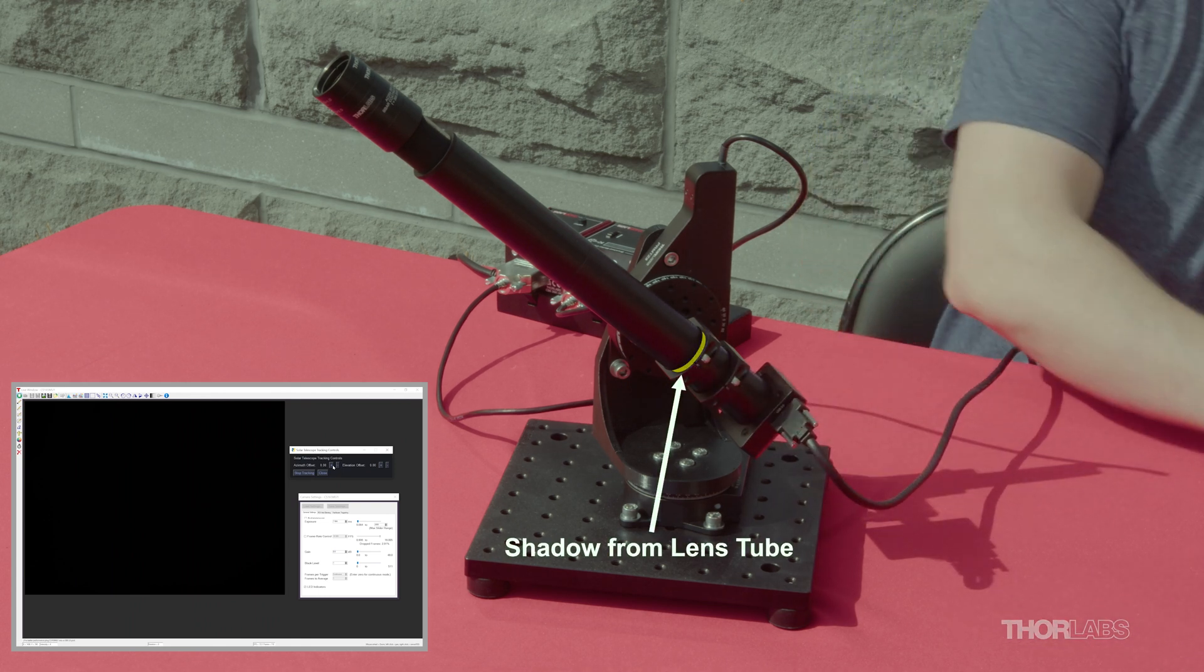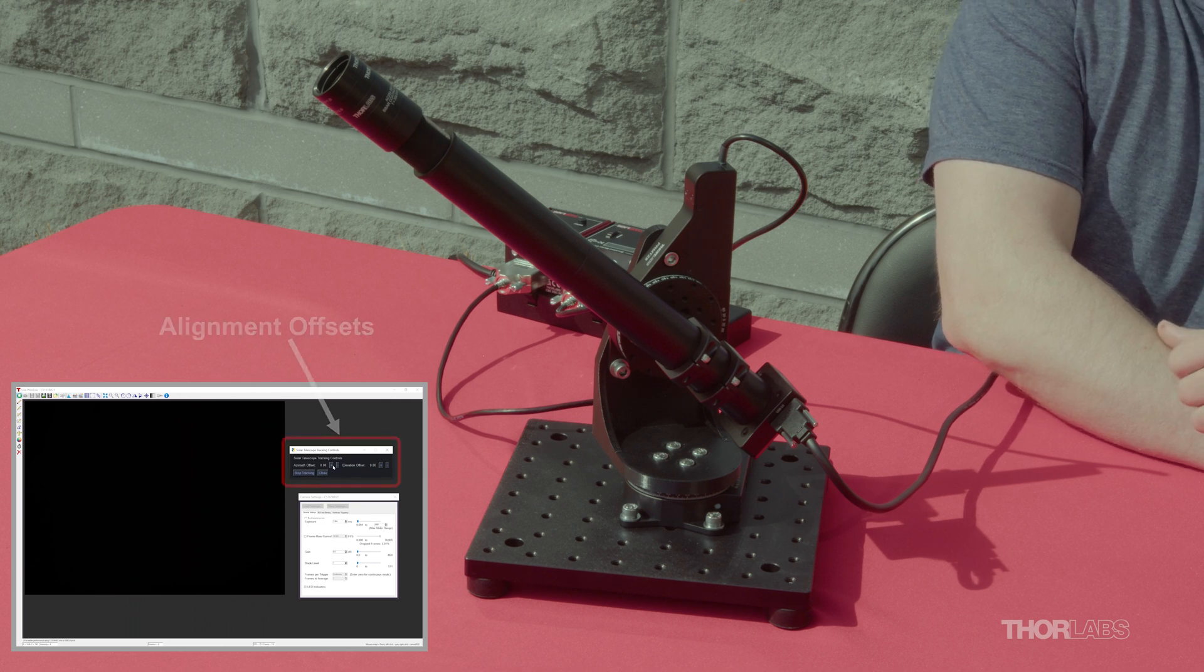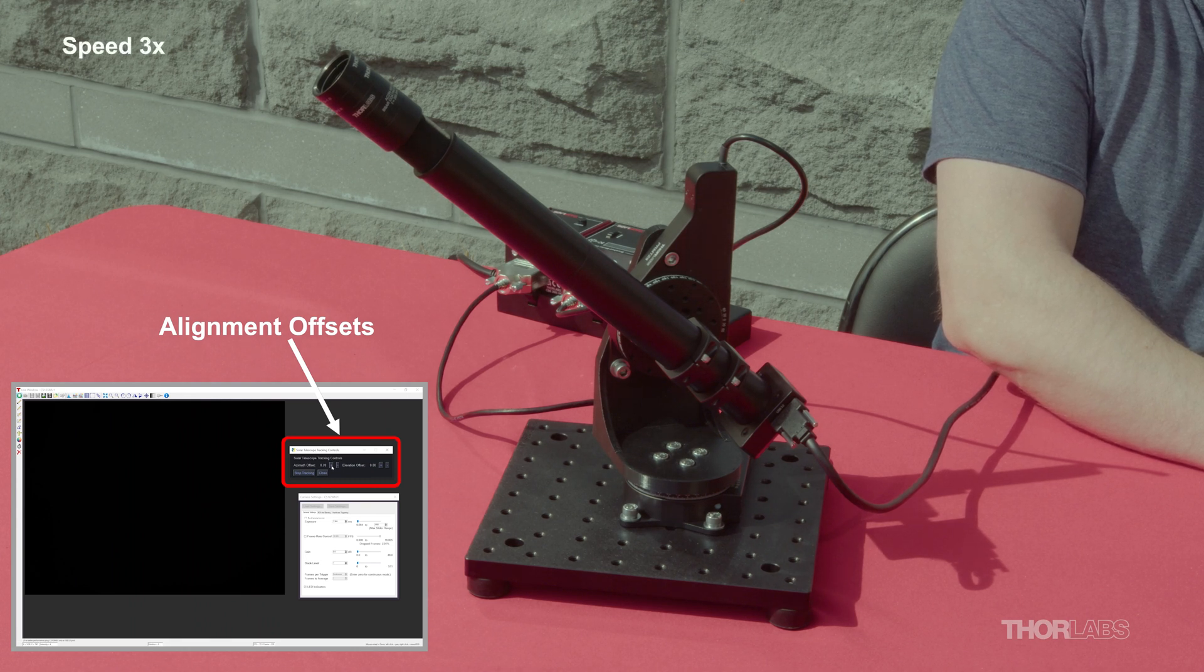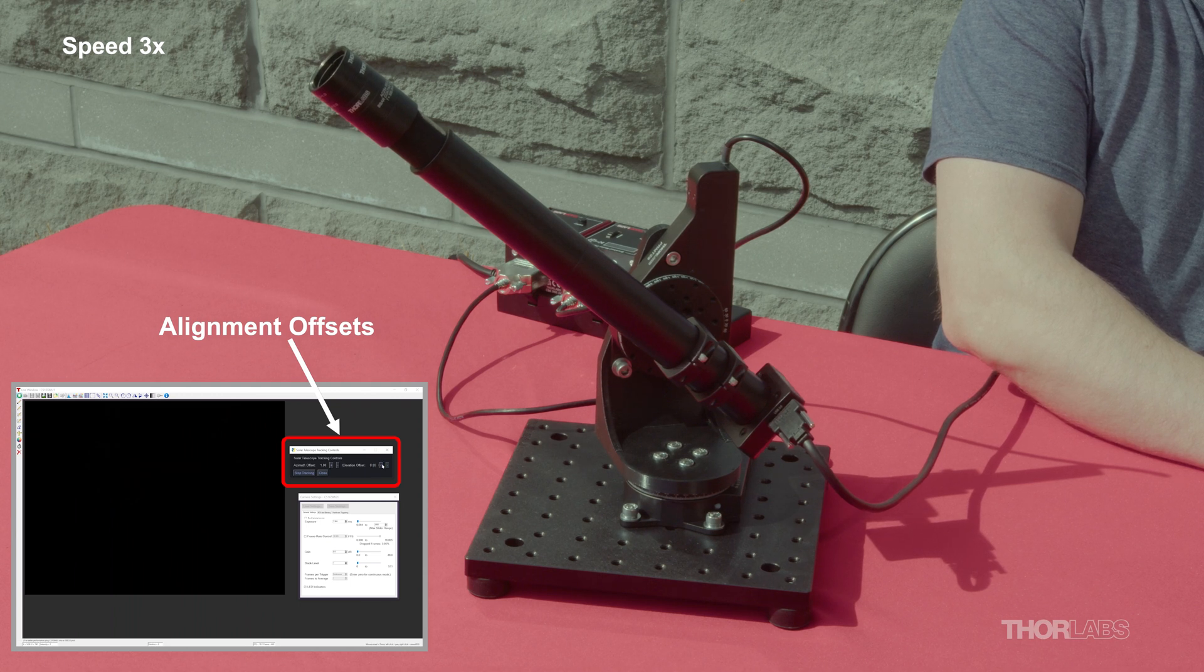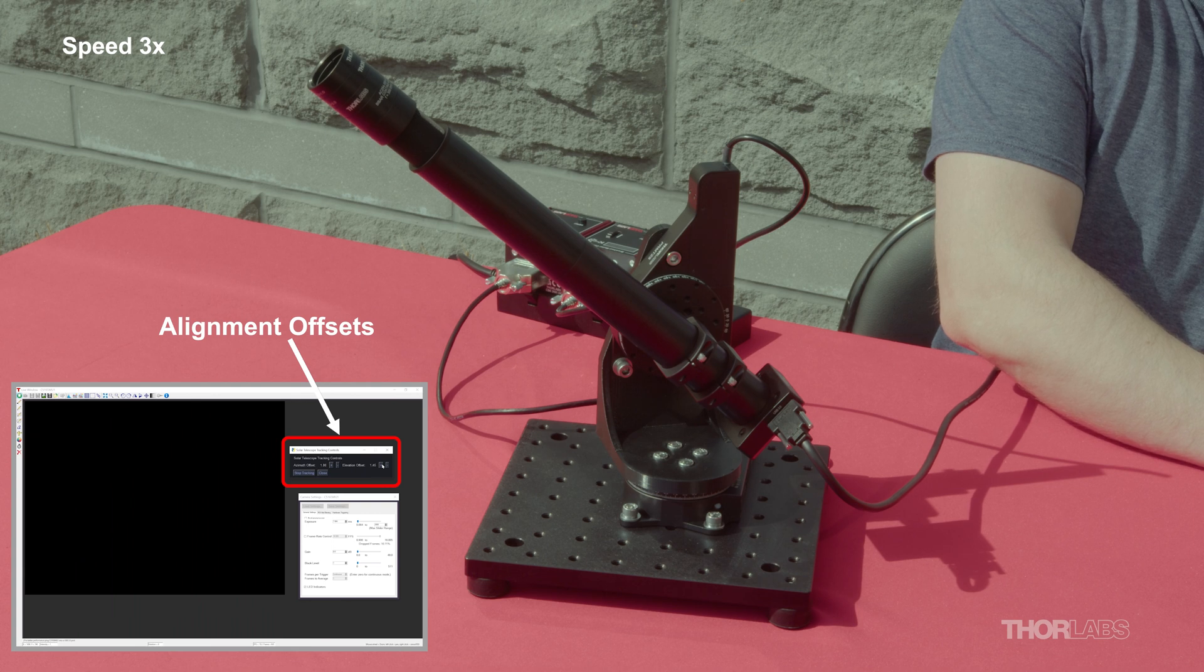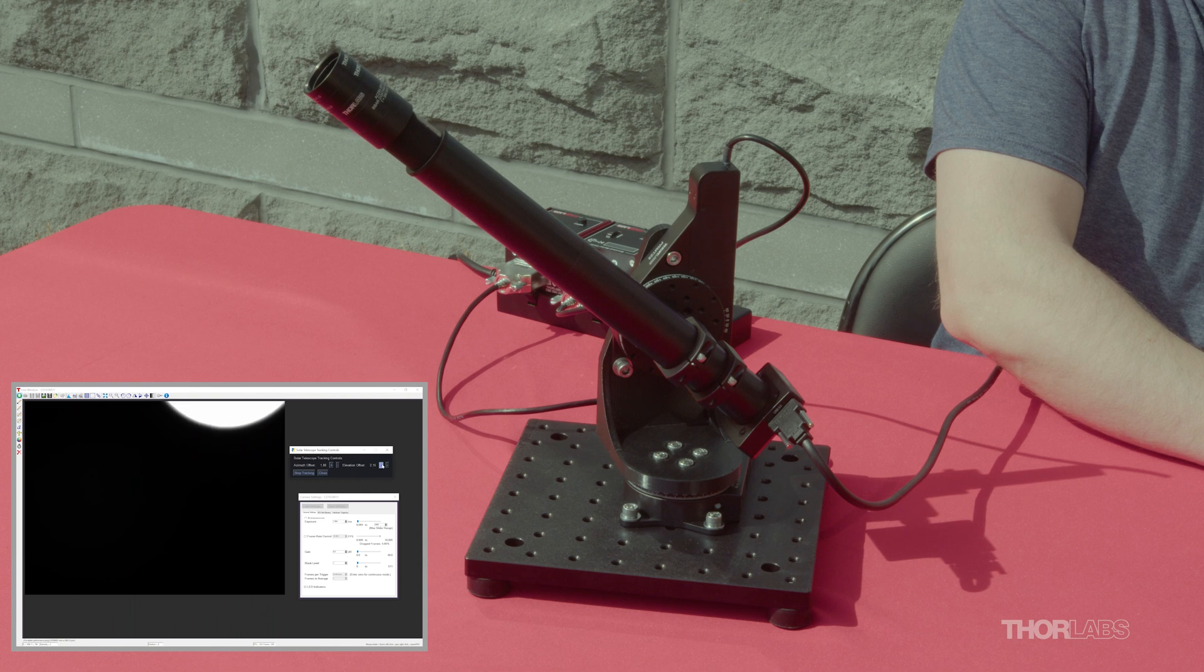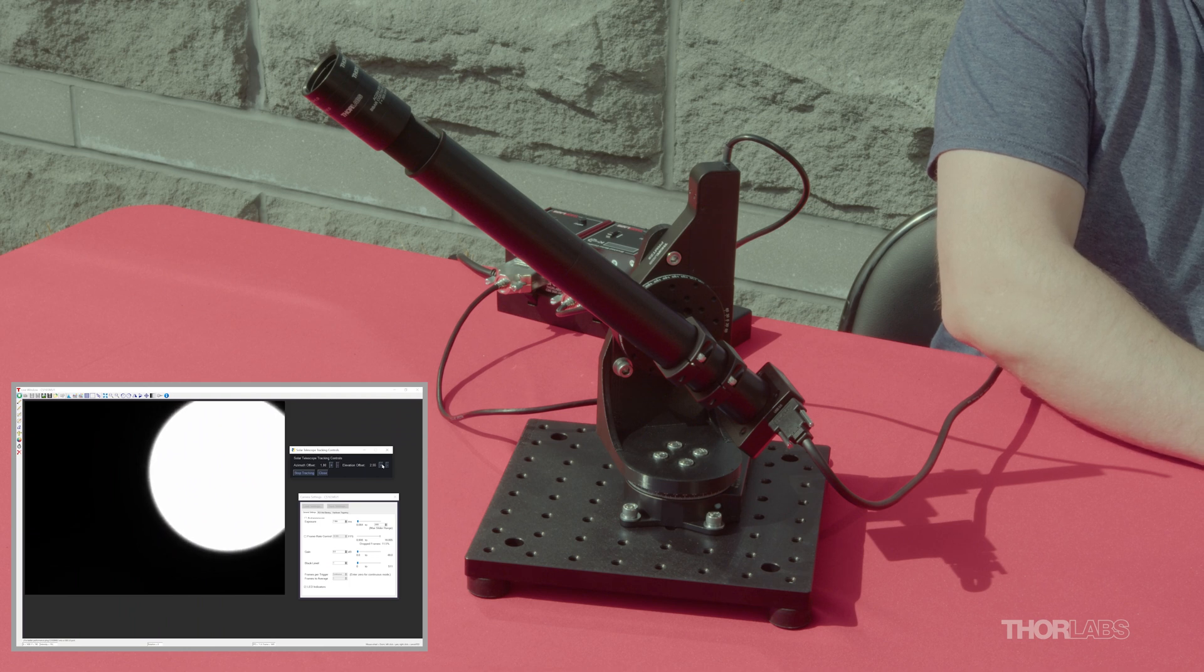When aligned to the sun, the telescope's lens tube should cast no shadow. We can use the shadow's position to know which direction to move and adjust position and steps until the sun is on screen. It does work well.